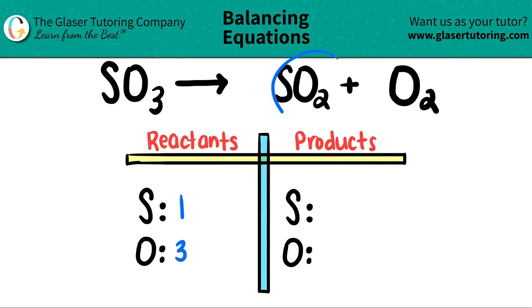On the right-hand side, I see that I have a sulfur, right? There's no subscript, so that means one. But then for the oxygen, just be careful. I see oxygen here and here, so I have to literally add the two numbers together, right? There's a plus sign here. So two oxygens plus two more oxygens is a total of four oxygens.